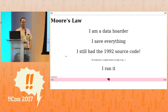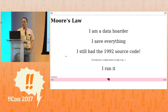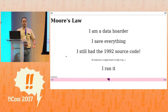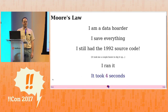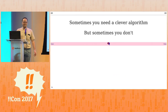I am a data hoarder — I save everything. I still had the 1992 source code that did the scoring the naive way; it took me a couple hours to hunt it up. I ran it because I wanted to know the actual improvement from using the better algorithm compared to 25 years' worth of better hardware. The old code used to take two and a half to three hours. It took four seconds. So the moral of the story is: sometimes you need a clever algorithm, and sometimes you don't.